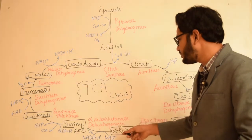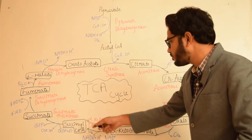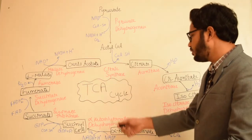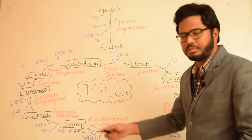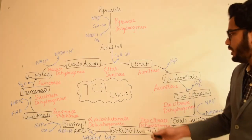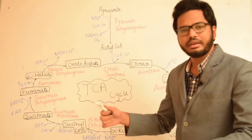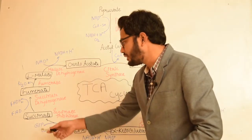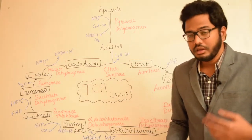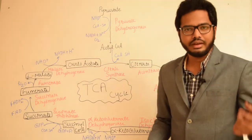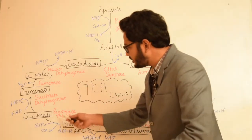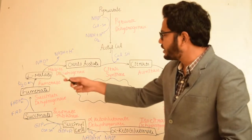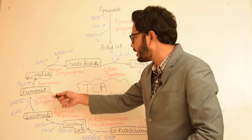The five-carbon alpha-ketoglutarate, in the presence of alpha-ketoglutarate dehydrogenase, leads to formation of succinyl-CoA with simultaneous release of carbon dioxide and conversion of NAD⁺ to NADH. Once succinyl-CoA is formed, there is substrate-level phosphorylation leading to formation of GTP, which is eventually converted to ATP in the presence of the enzyme nucleoside diphosphate kinase.